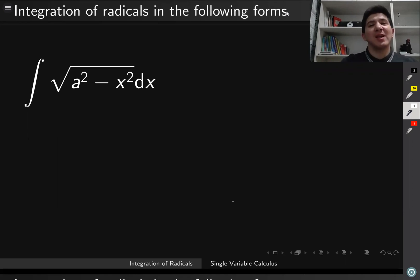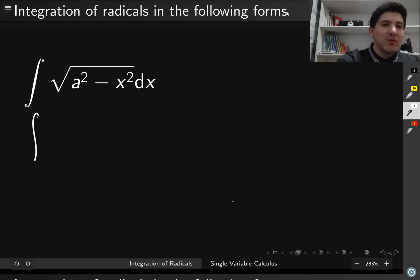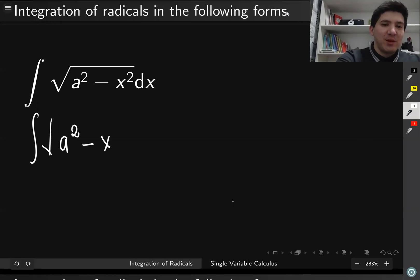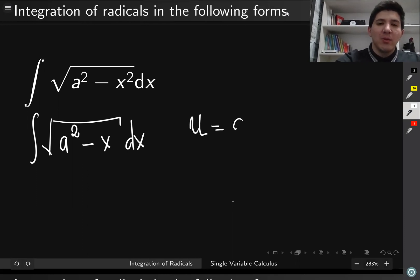Just imagine that if our function would be slightly different, it would be much easier to integrate. For example, if our integration had a square root of a² minus x — just simply x, not x squared — then it would be much easier. We could just make one substitution: u equal to a² minus x.